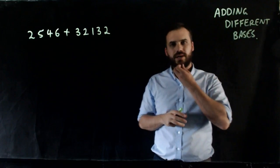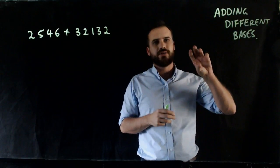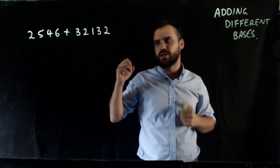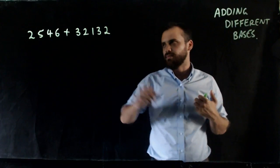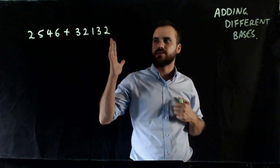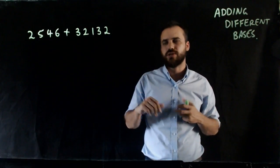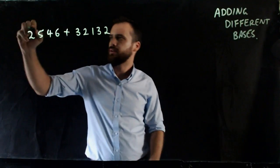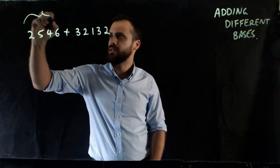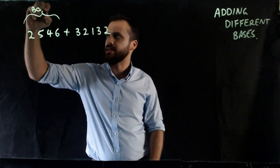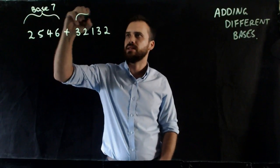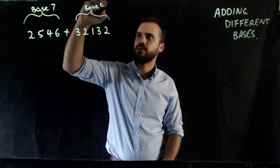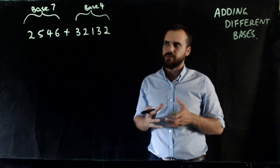So another video about number systems. This time we're going to add different bases. So if you look at this, you're probably thinking, man, that's so easy. I'm just going to do it like that. 2,546 plus 32,132 — you can probably do that in your head. But what if this number was in base 7 and this number was in base 4? Now you've got problems.